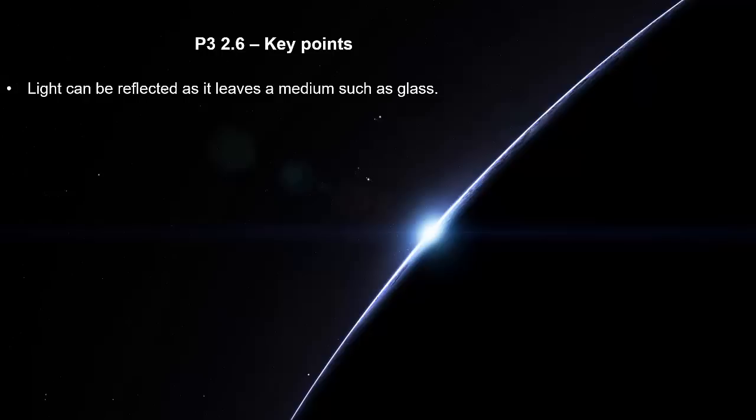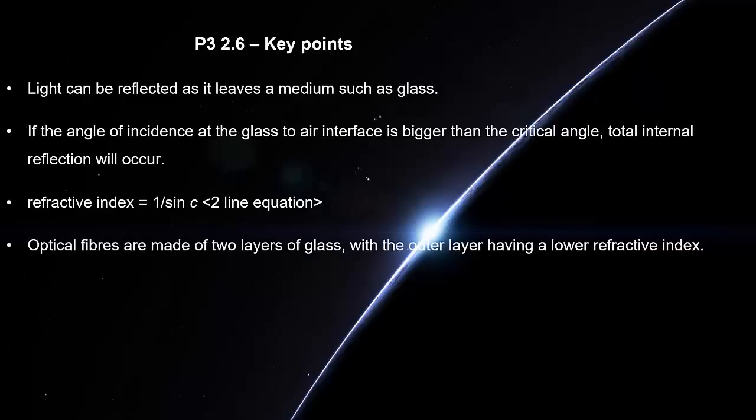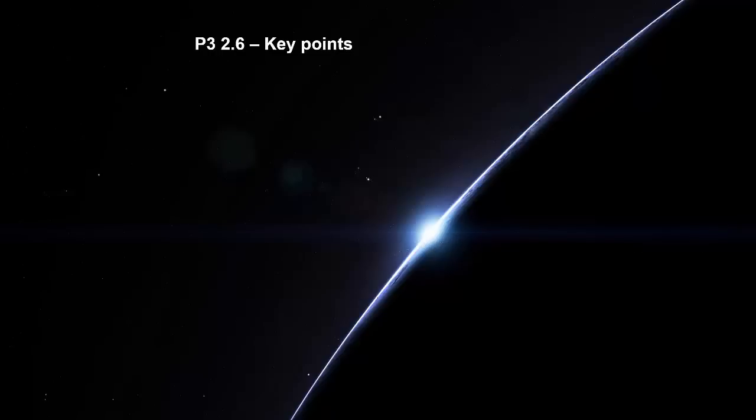Light can be reflected as it leaves a medium such as glass. If the angle of incidence at the glass-to-air interface is bigger than the critical angle, total internal reflection will occur. Refractive index equals 1 over sinc. Optical fibers are made of two layers of glass, with the outer layer having a lower refractive index. Light is totally internally reflected inside optical fibers.